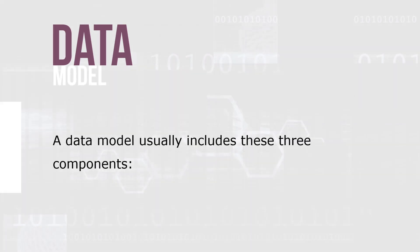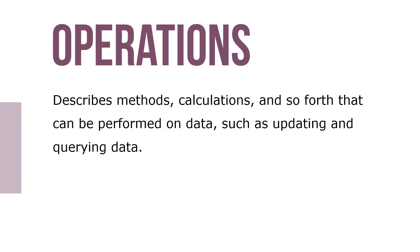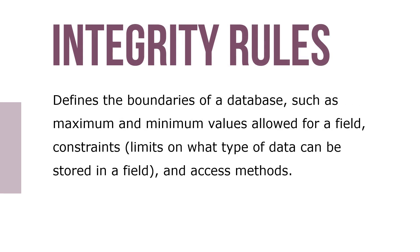A data model usually includes three components: data structure, which describes how data is organized and the relationship among records; operations, which describes methods, calculations, and so forth that can be performed on data, such as updating and querying data; and integrity rules, which define the boundaries of the database, such as maximum and minimum values allowed for a field, constraints on what type of data can be stored in a field, and access methods.